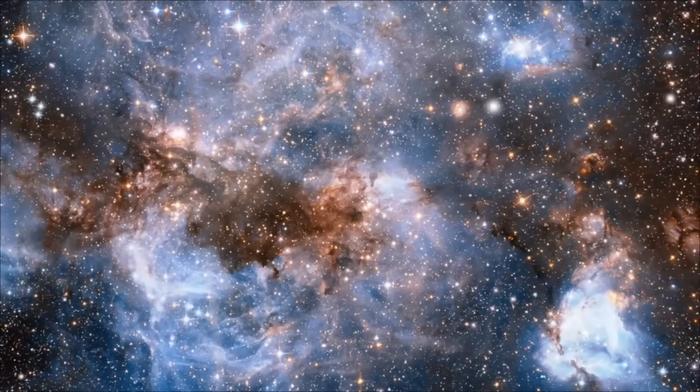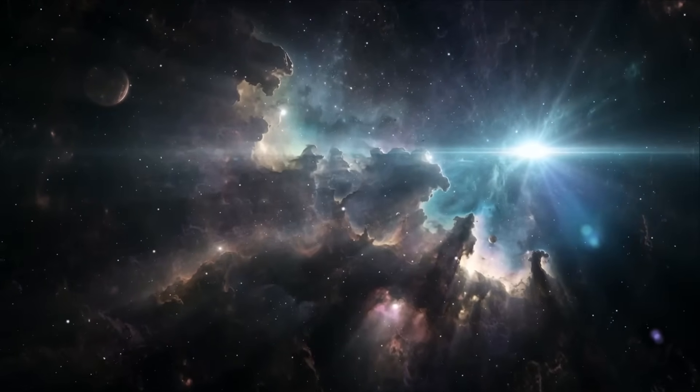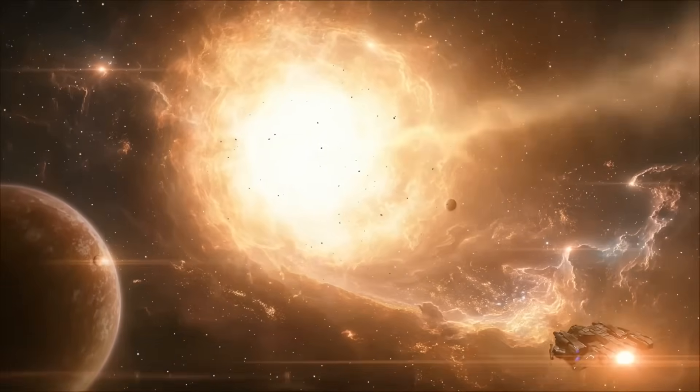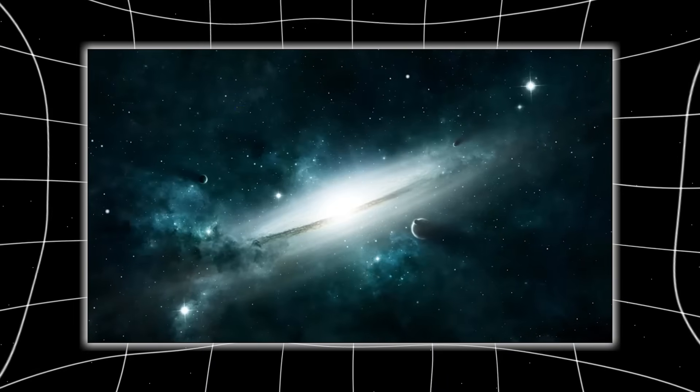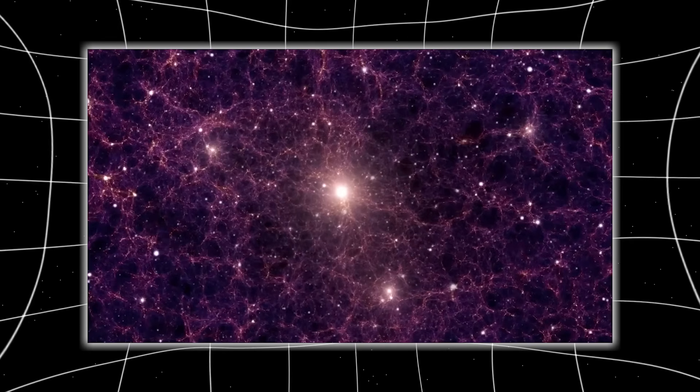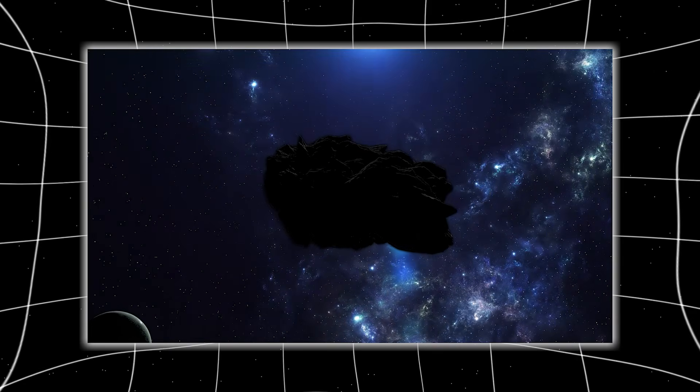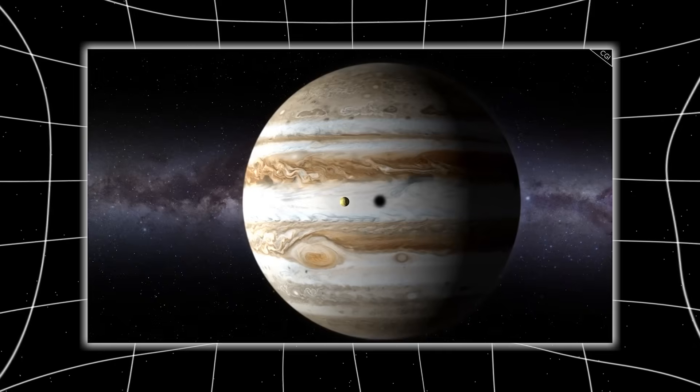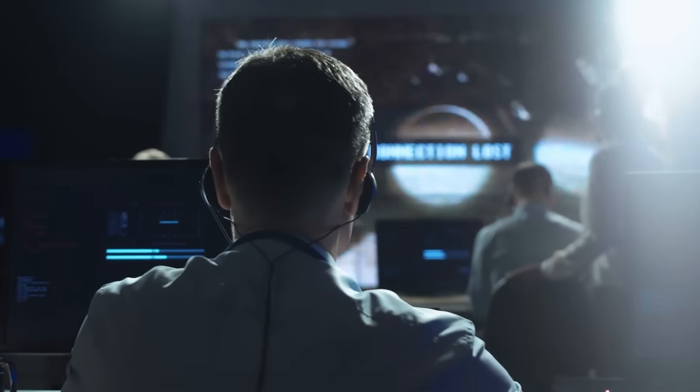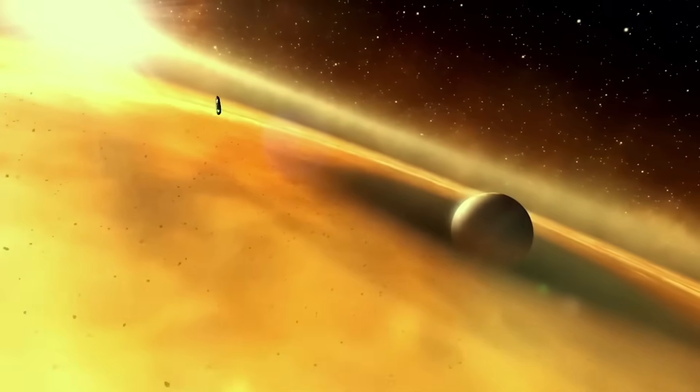Atlas's origin point traces back toward the constellation Sagittarius, a region near the galactic core where interstellar density rises and star formation histories become chaotic. Whatever birthed Atlas wasn't like our sun. It came from a place where chemistry and gravitational forces shape objects under unfamiliar rules. Its velocity ensures it was never bound to our system. It flew in from another star and will fly out again. And yet, before leaving, it seems determined, consciously or not, to brush the gravitational influence of Jupiter. This is what unsettles astronomers the most. Visitors don't take scenic detours. They pass through. They don't correct course. They don't aim.